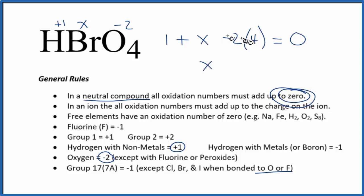So x, that's minus eight plus one, so minus seven equals zero. x is going to equal a positive seven.